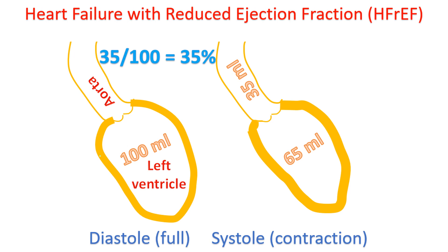The early stage of diabetic cardiomyopathy is subclinical with structural and functional abnormalities. As time passes, it progresses to heart failure with preserved ejection fraction and later into heart failure with reduced ejection fraction.